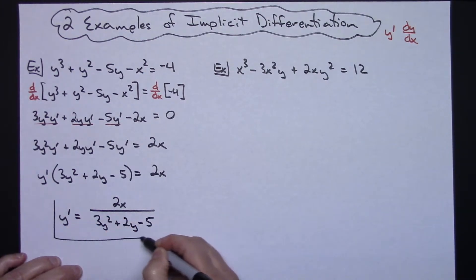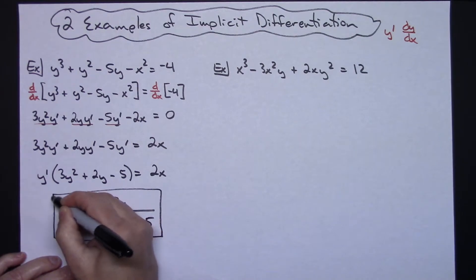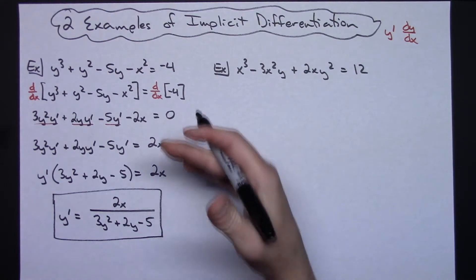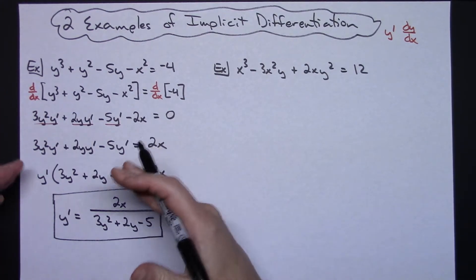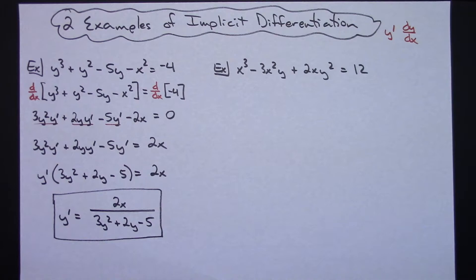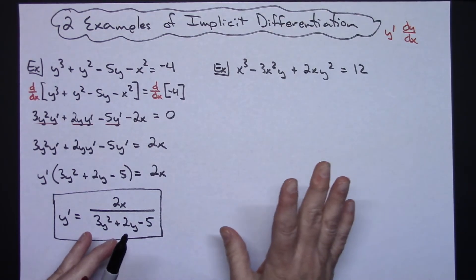Dividing both sides by the polynomial gives y′ = 2x / (3y² + 2y − 5). As far as implicit differentiation goes, that's pretty straightforward — there were no product rules or anything to make it complicated. Now in the second example we're going to beef it up a little bit.